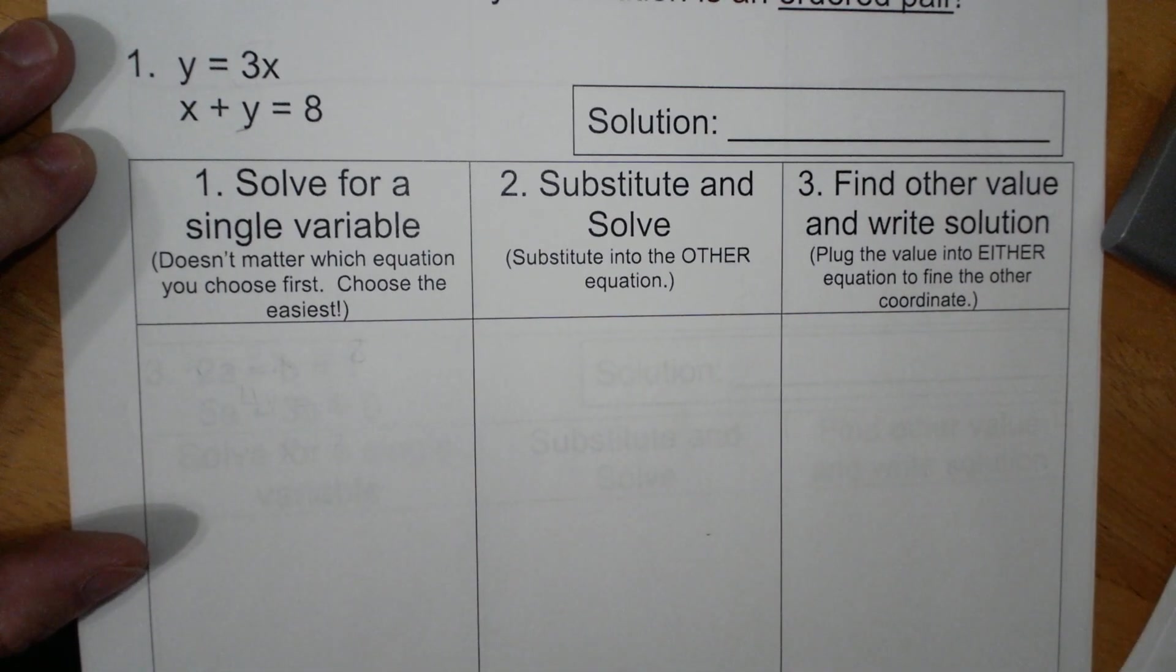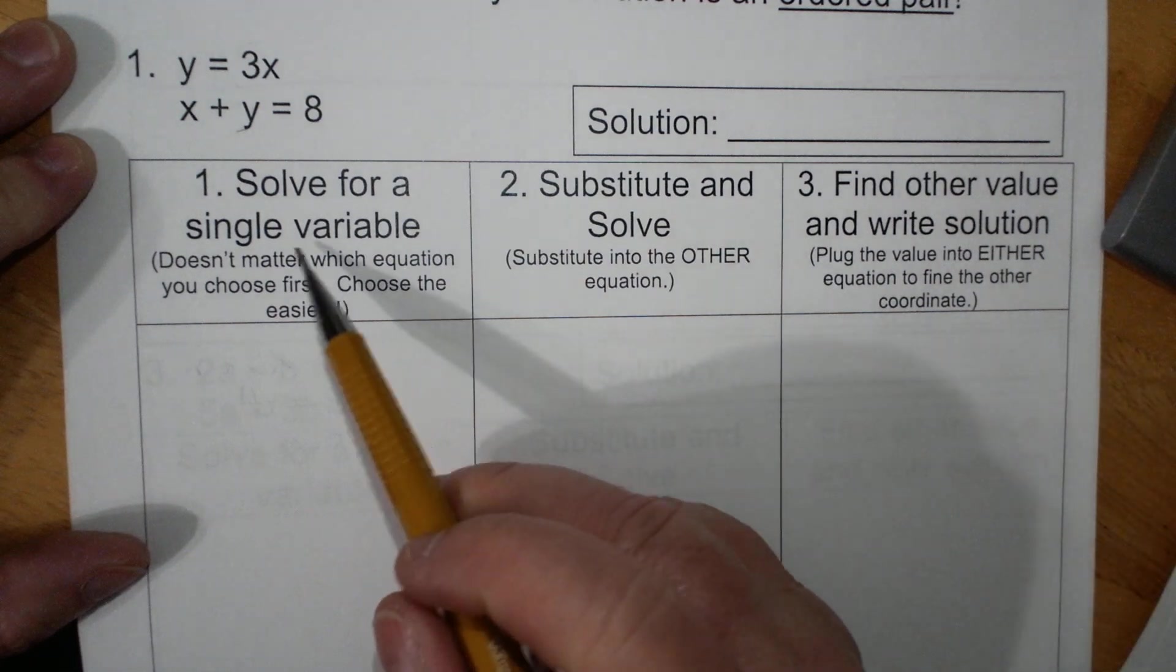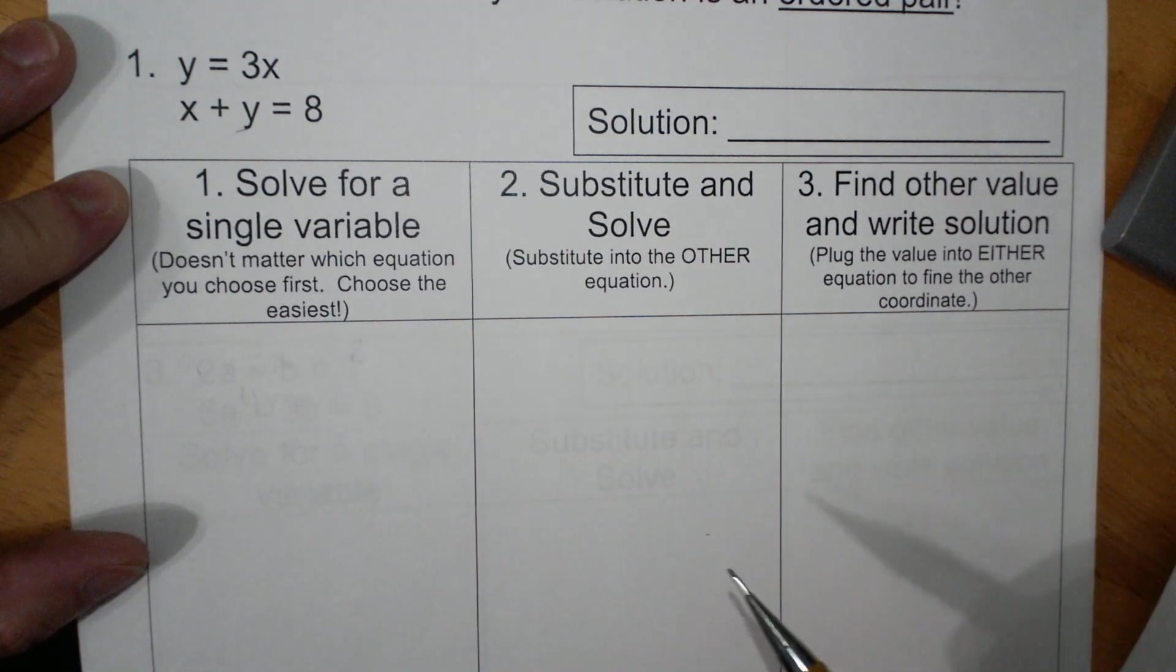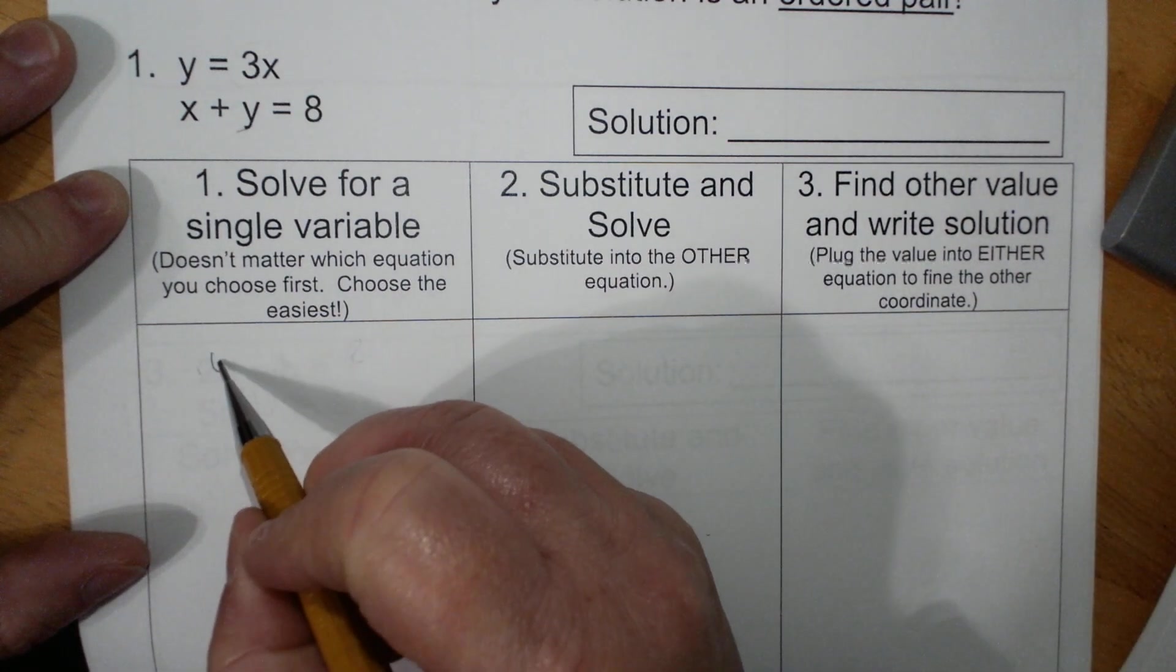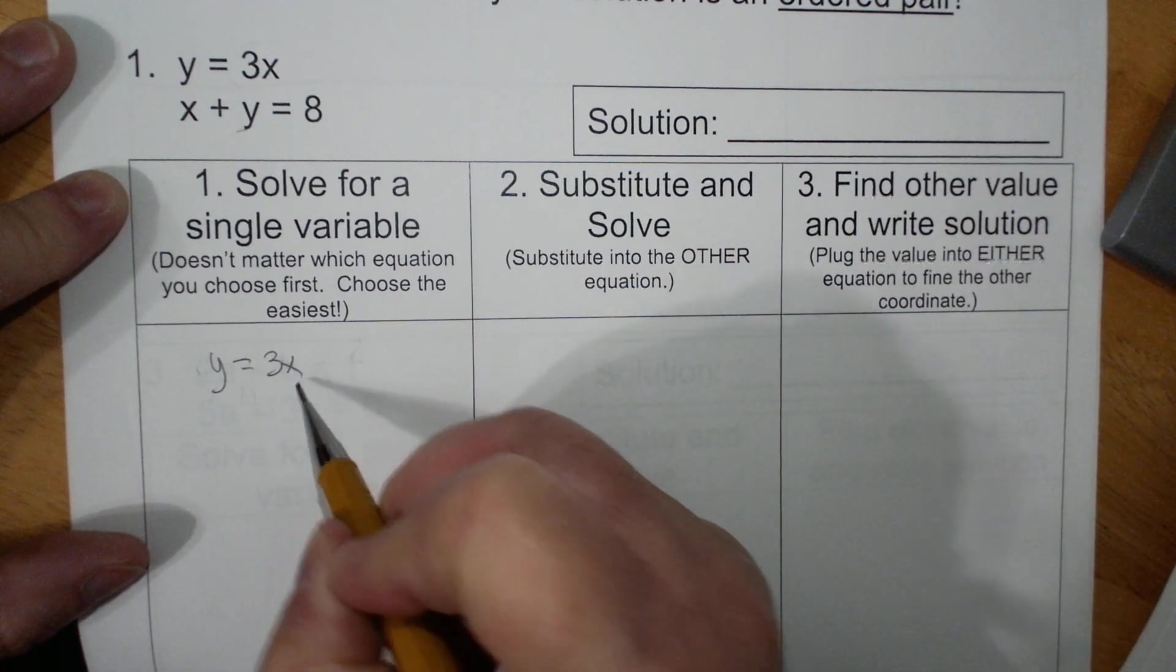So here we go. Three steps, lots of places to write. It says solve for a single variable. It doesn't matter which equation you choose first. Choose the easiest. Since I have y equals 3x, I'm going to use that.